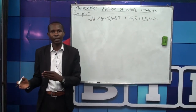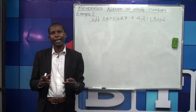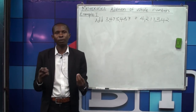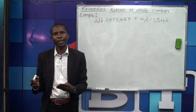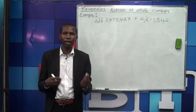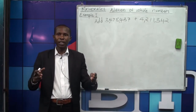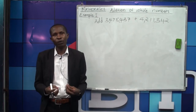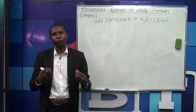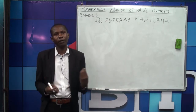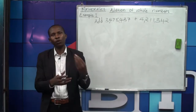We already looked at place values. That is the main tip we are supposed to follow when handling addition, subtraction, multiplication, or division. Before we handle any number, we have to look at the place values of each digit. We begin adding from ones, then move to tens, then gradually until we reach the highest place value.